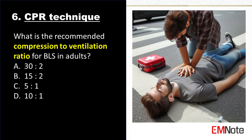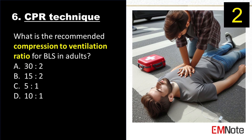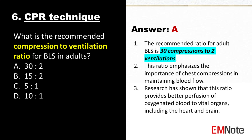What is the recommended compression to ventilation ratio for BLS in adults? The answer is A: 30 compressions to 2 ventilations. The recommended ratio for adult BLS is 30 compressions to 2 ventilations.